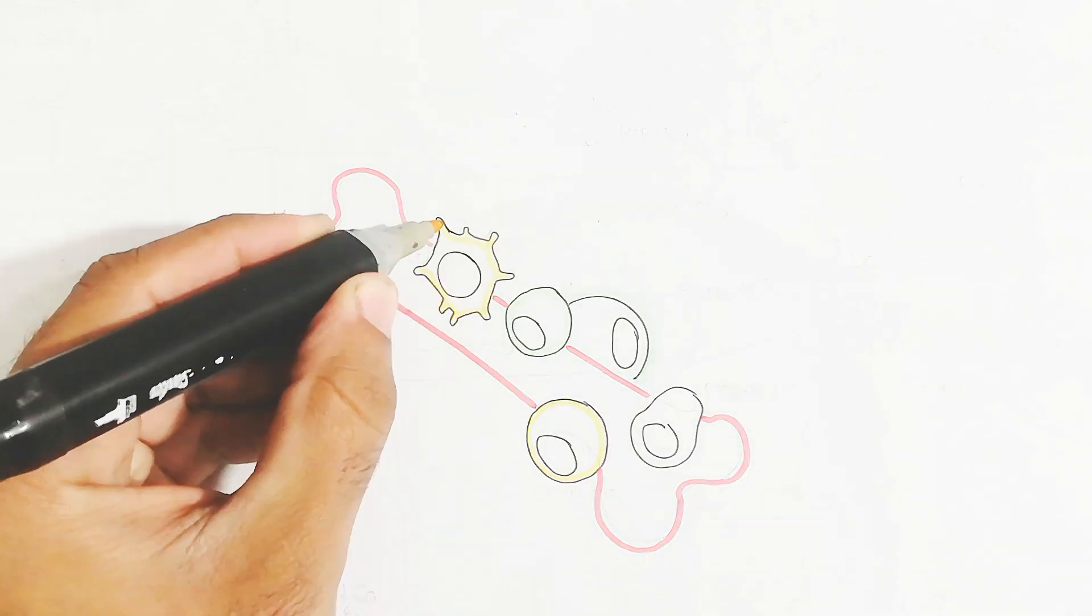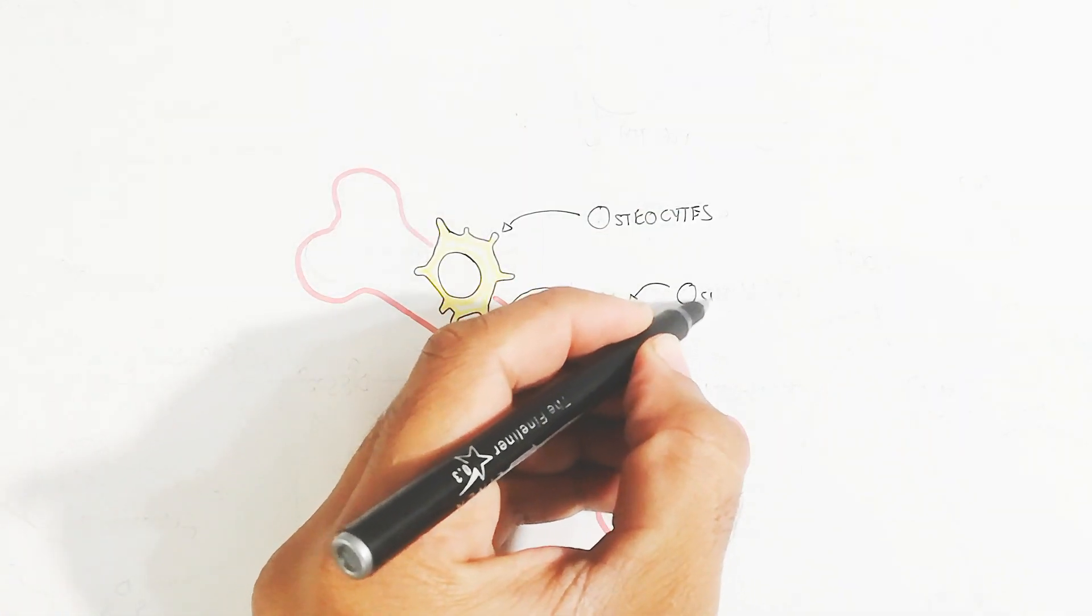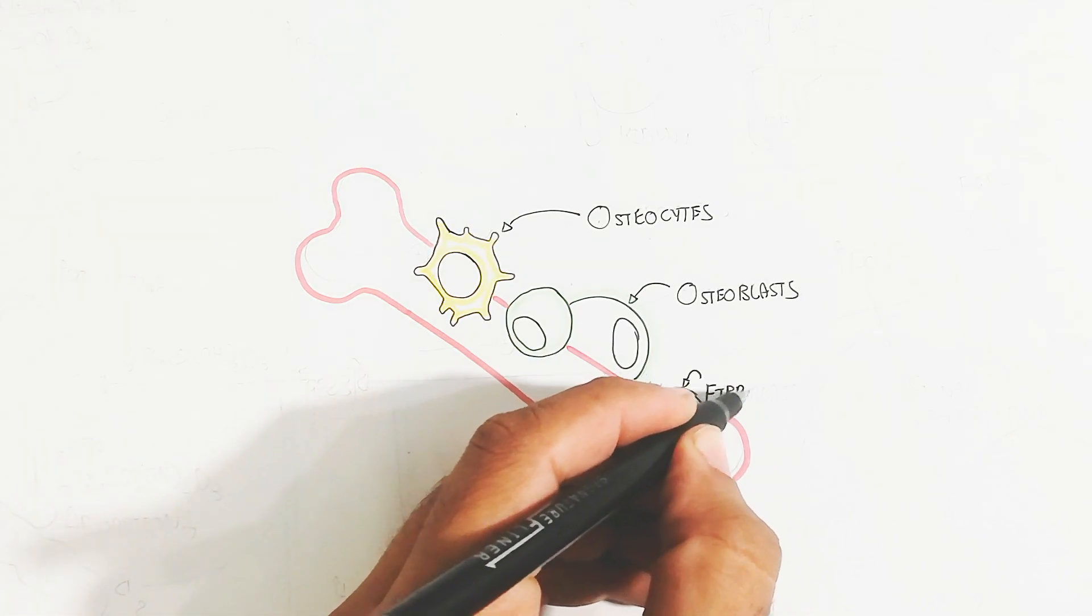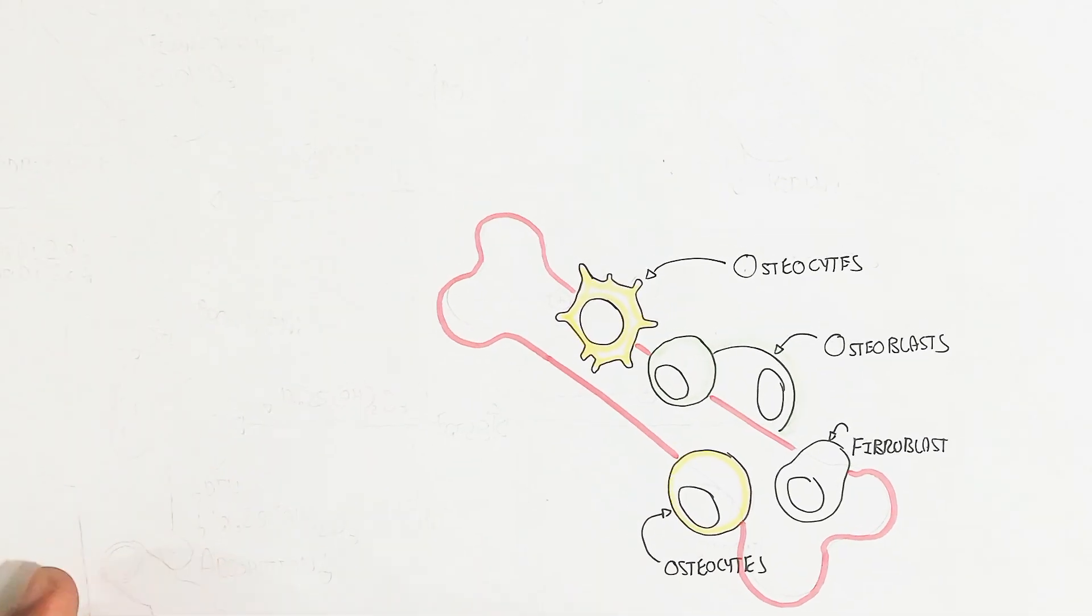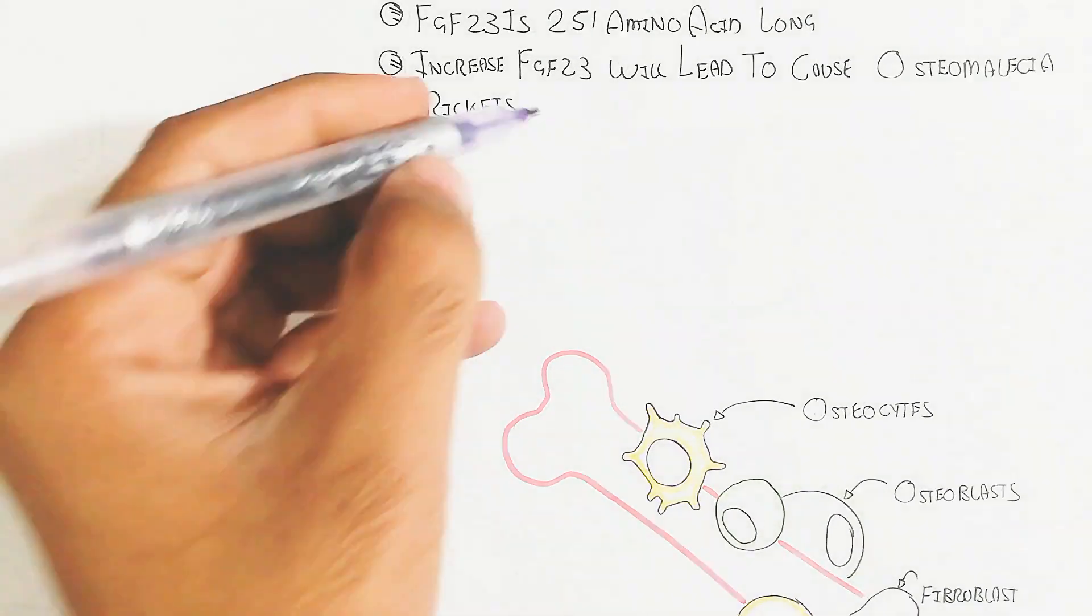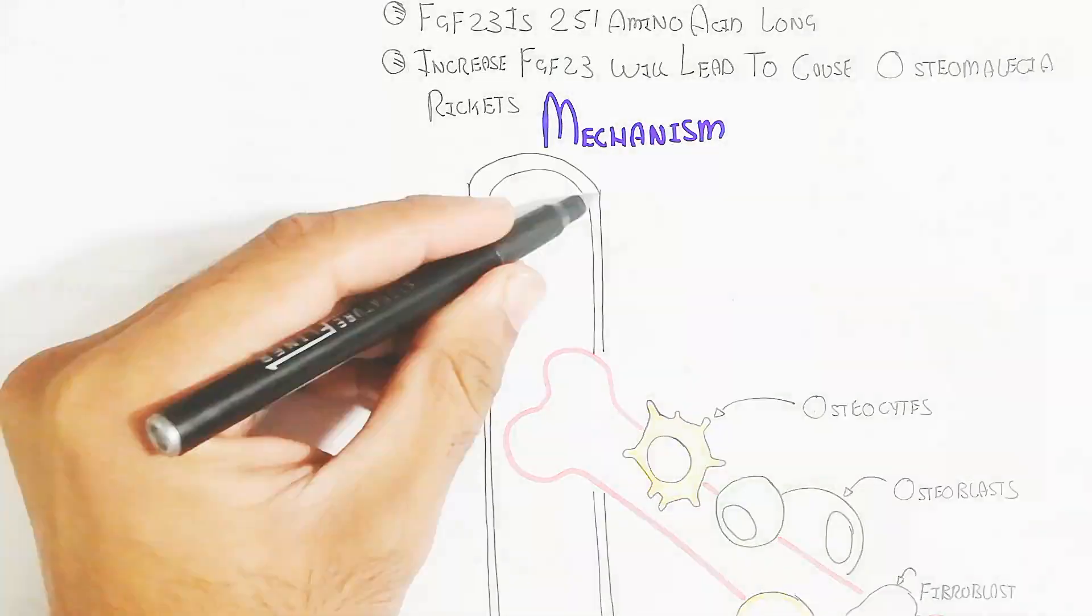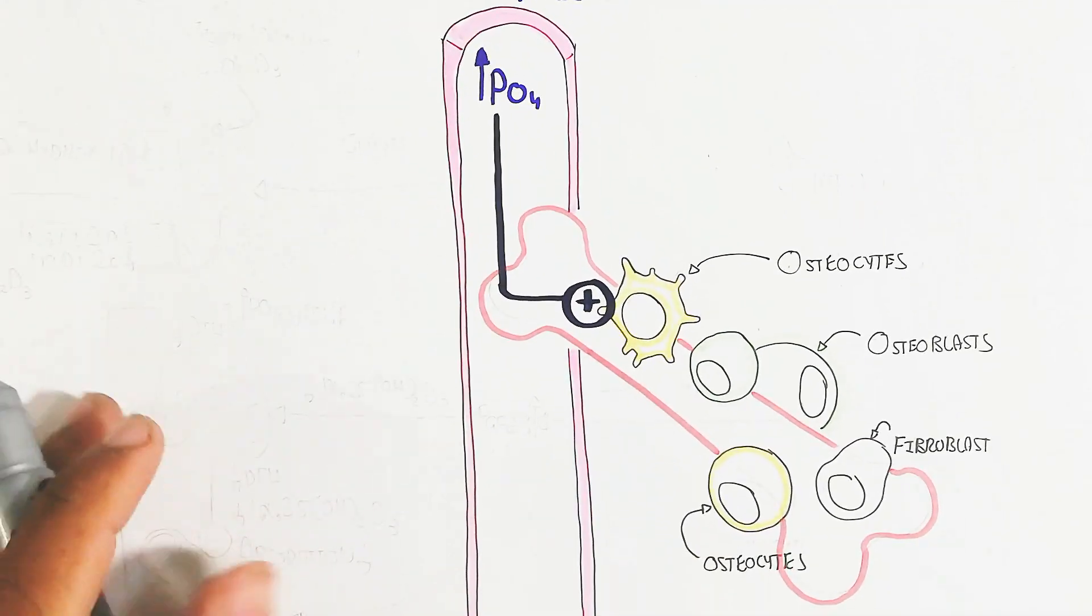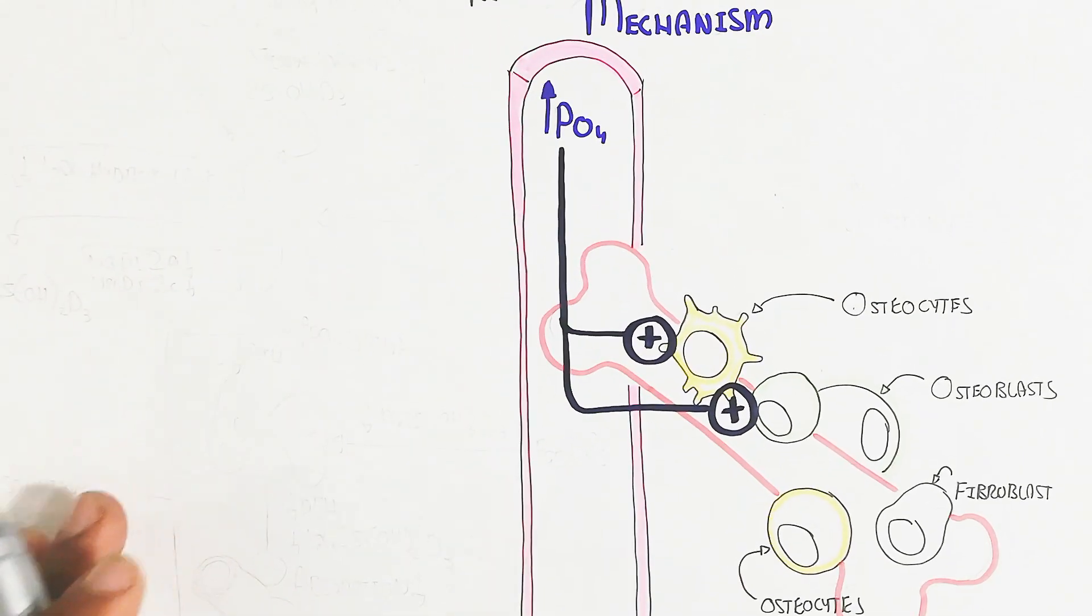Let's begin to understand this is the bone, which is the compact bone containing osteocytes. Osteoblast is the bone forming cell, osteocyte is the mature bone cell, and the fibroblast. So let's begin to understand the mechanism. When the phosphate group rises in the blood circulatory system, it will trigger the osteocyte and osteoblasts to release FGF23.